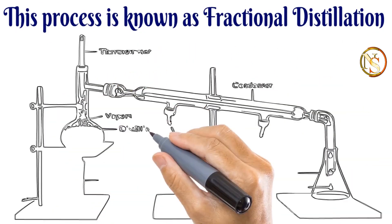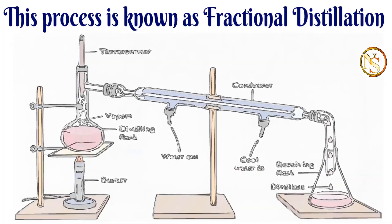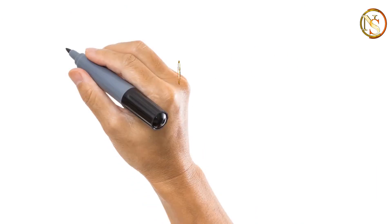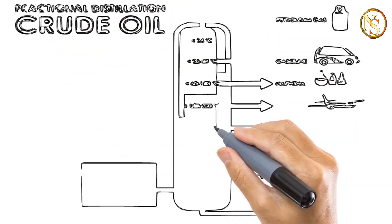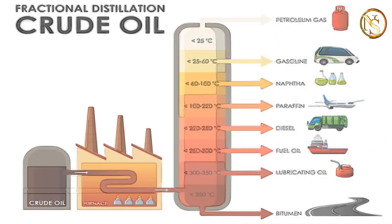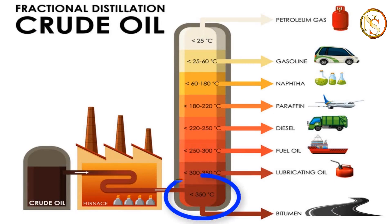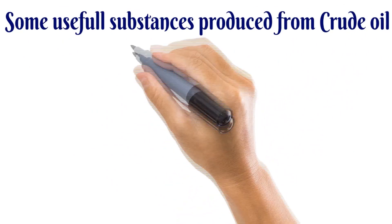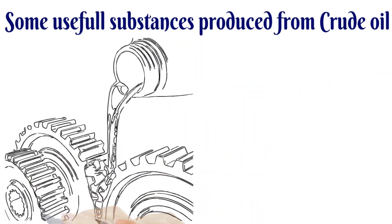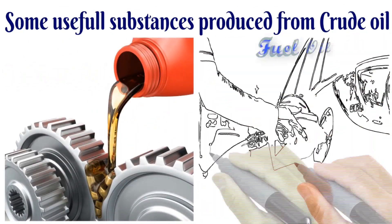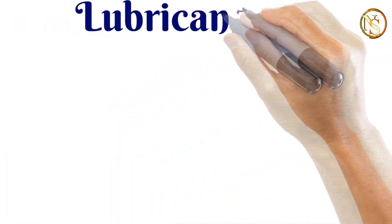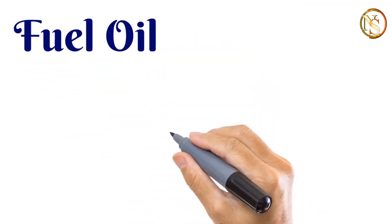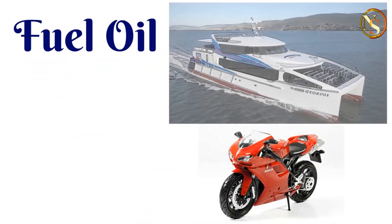I hope it is not a new terminology to us. You can refer to form one subtopic, separation of mixture, where you can easily find the definition of fractional distillation. The molecules with large molecular masses have higher boiling points, hence they turn into liquid collected at the bottom. Crude oil may produce a variety of useful substances such as lubricant oil and fuel oil. Lubricant oil is applied in movable parts of machines, and fuel oil is used in motor vehicles, ships or jets.